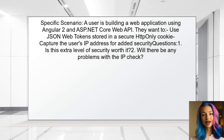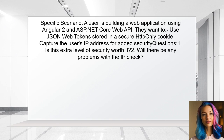Let's look at a specific scenario. One user is building a web application using Angular 2 and ASP.NET Core Web API. They want to use JSON web tokens stored in a secure HTTP-only cookie and are considering capturing the user's IP address for added security. They have two main questions: is this extra level of security worth it, and will there be any problems with the IP check they're thinking of using?